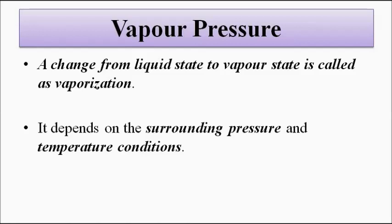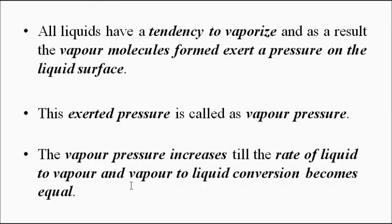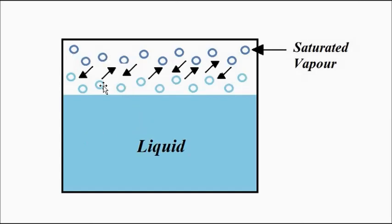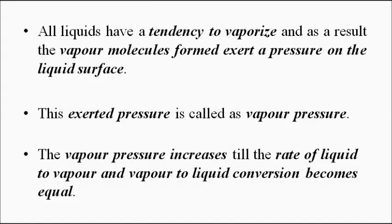All liquids at a certain value of temperature and pressure — which is unique to different liquids with different properties — have a tendency to vaporize. When liquid molecules undergo vaporization and vapors are formed, the vapor molecules get accumulated on top of the liquid and they exert a pressure on the liquid. That pressure is called vapor pressure.